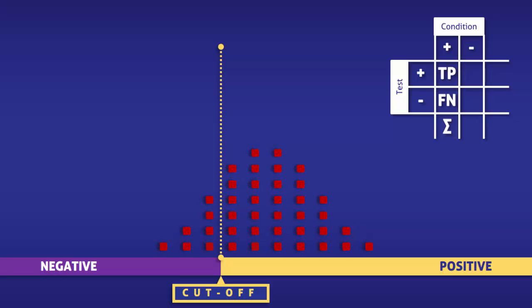After counting the red squares, we find that there are 33 true positives, 7 false negatives, and 40 people in total with the condition.